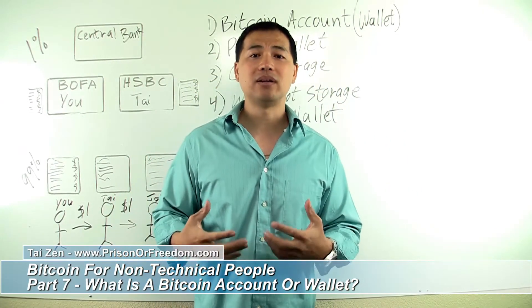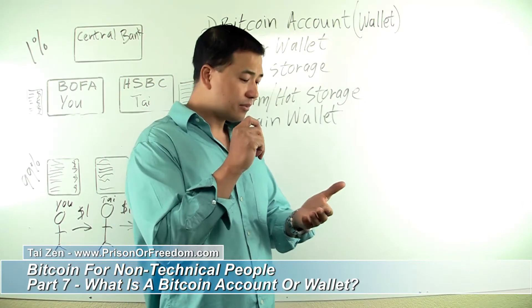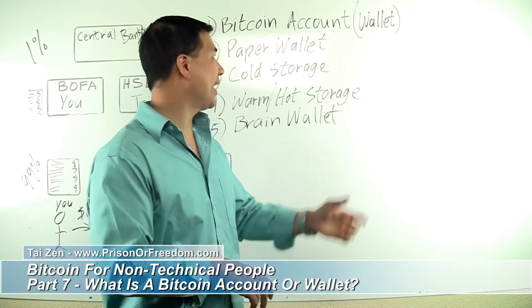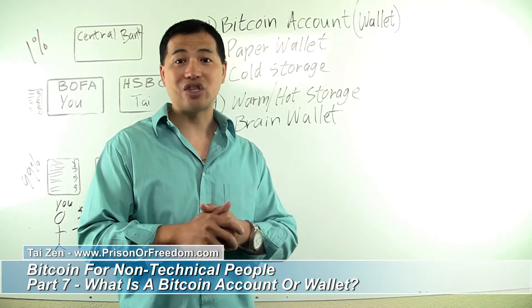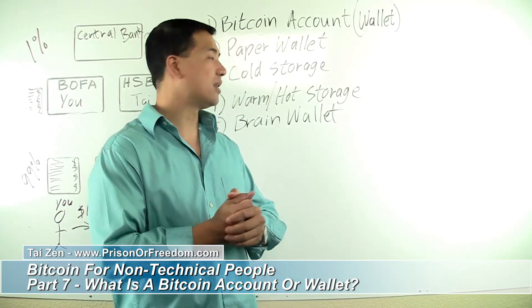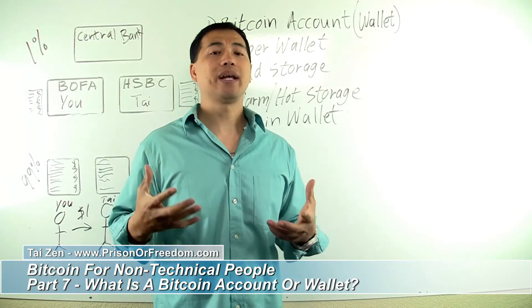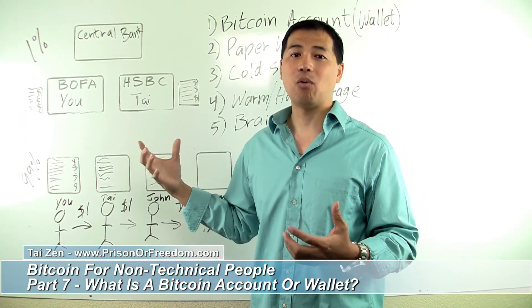So hopefully in this video I was able to help you understand what a Bitcoin account and Bitcoin wallet are. A paper wallet means your private key is on a piece of paper and cannot touch the internet. Cold storage means you store the private key offline — on paper, wood, metal, stone, anything — as long as it's not touching the internet. Warm or hot storage means your computer with the Bitcoin account has access to the internet where people can potentially hack into it. A brain wallet is where the private key is remembered inside your head, whether it's a string of numbers and letters or an actual phrase, quote, or motto.